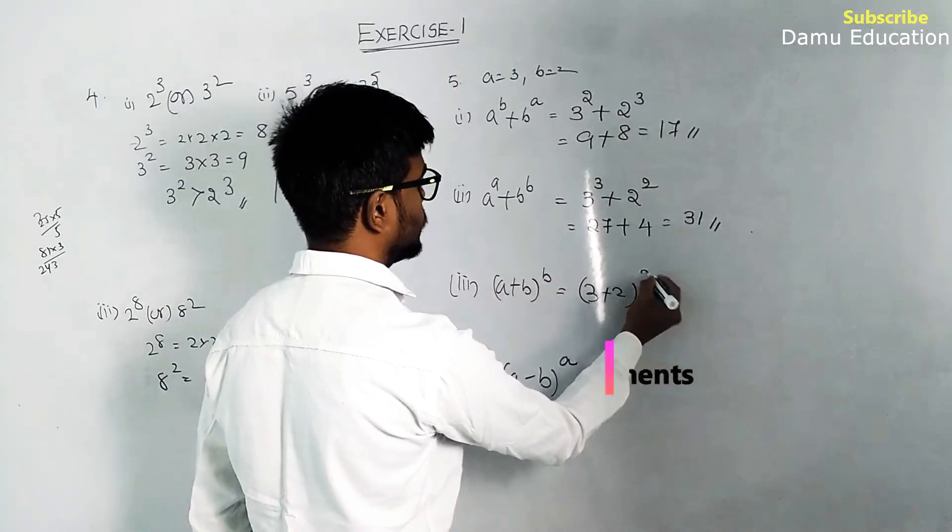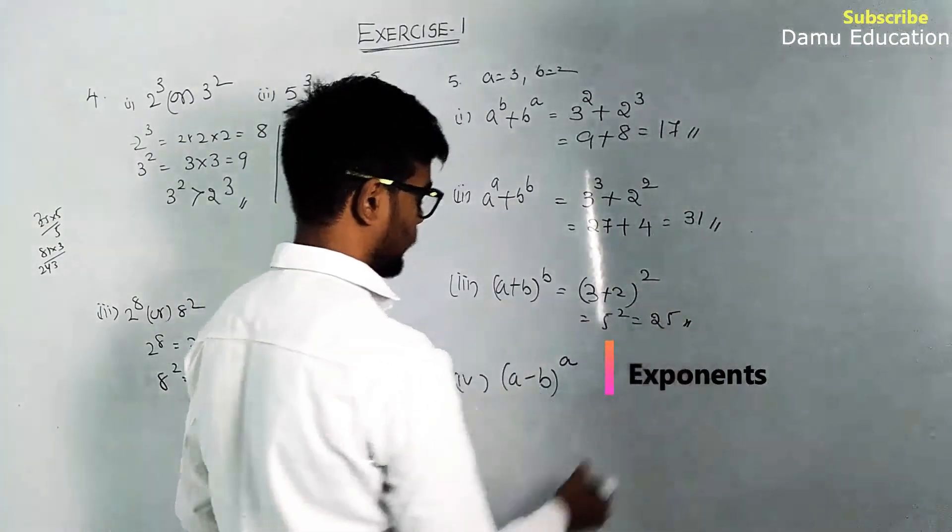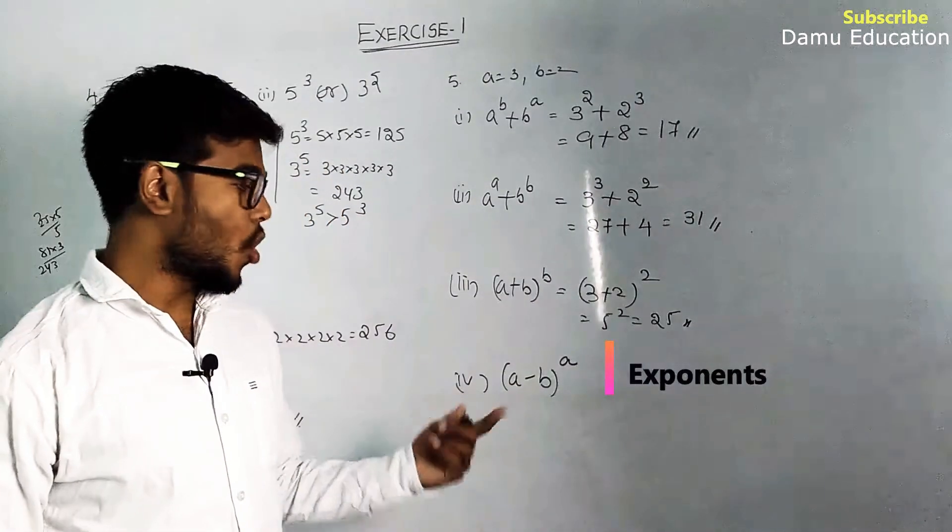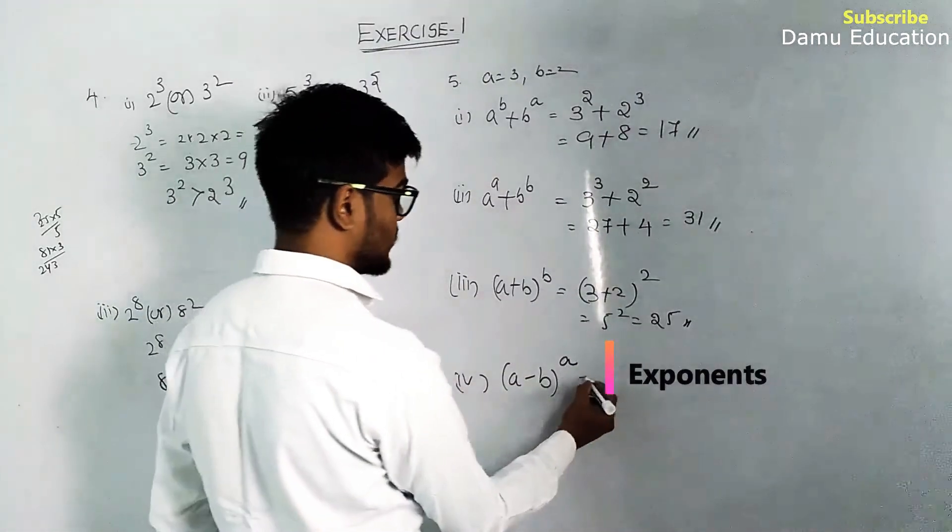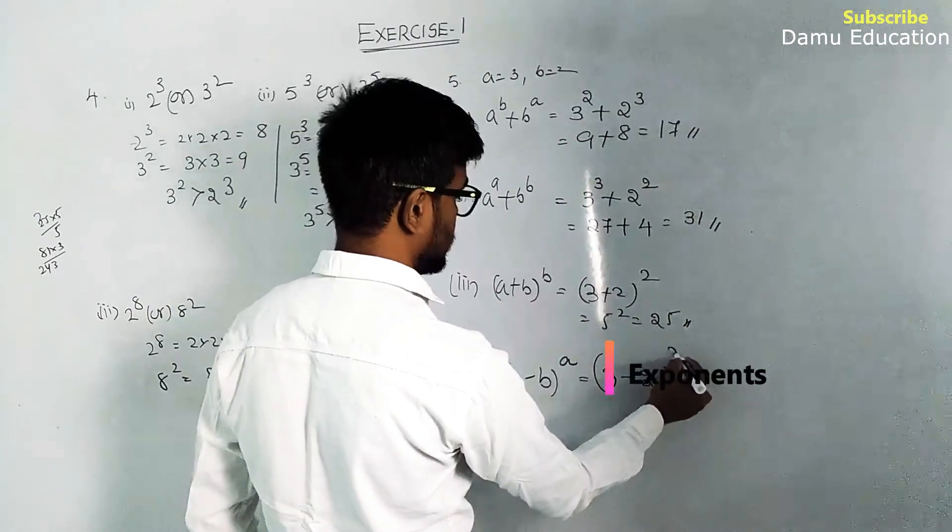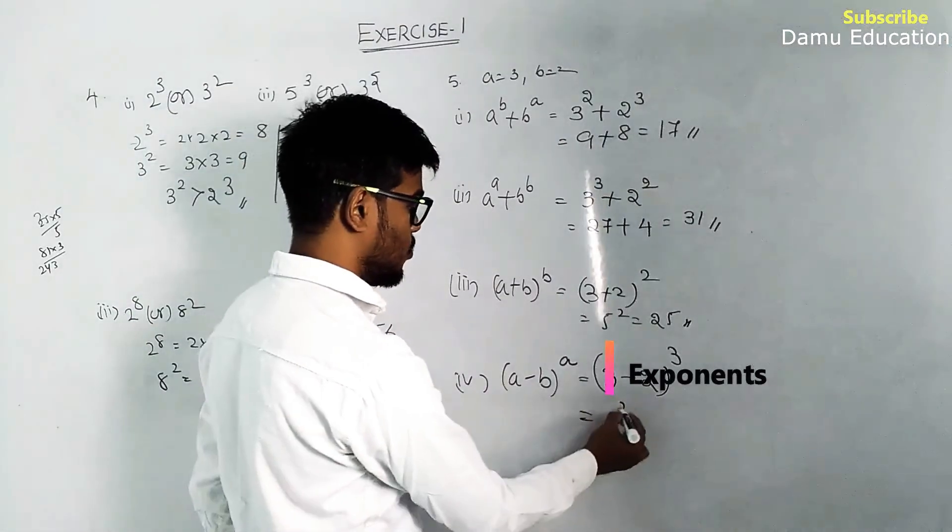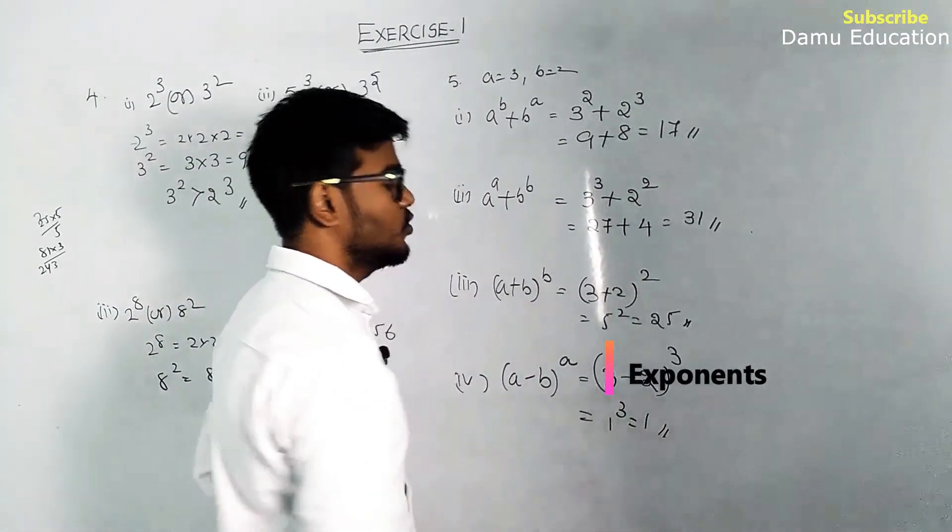Part (iii): (a + b)² equals (3 + 2)² = 5² = 25. Part (iv): (a - b)³, where a = 3 and b = 2. So (3 - 2)³ = 1³ = 1.